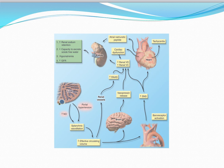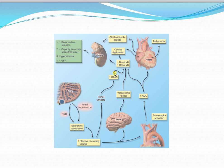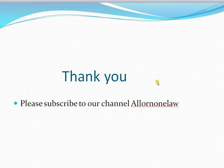In summary: cirrhosis causes increased intrahepatic pressure and portal hypertension, increasing nitric oxide and leading to splanchnic vasodilation, decreasing effective circulating volume. The brain senses this, releasing ADH to retain water, activating the sympathetic nervous system causing tachycardia and hyperdynamic circulation with cardiac dysfunction, and activating the renal RAS system causing sodium and water retention with renal vasoconstriction. Thank you — please subscribe to our channel, and our next video will cover the clinical features and management of hepatorenal syndrome.